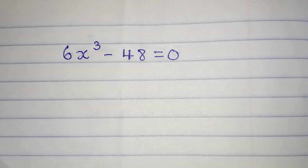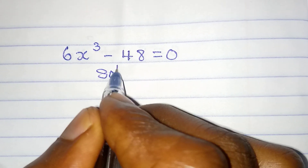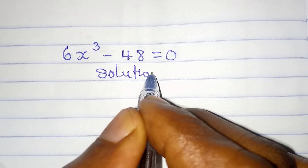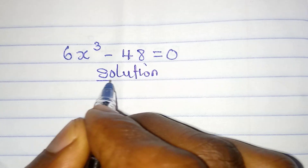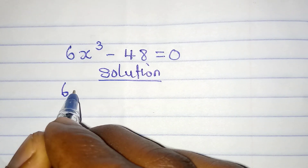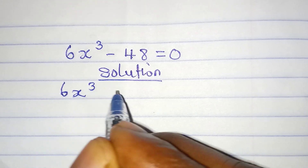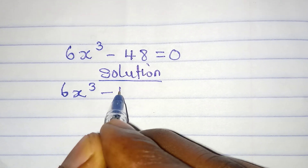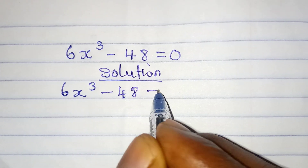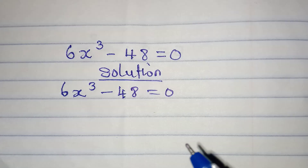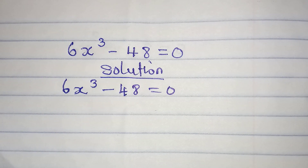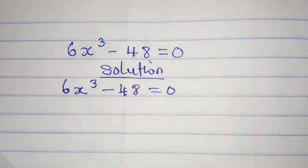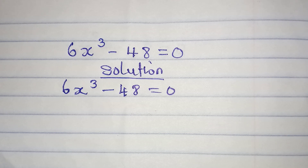Hello everyone, let's solve this problem very quickly. We have 6x to the power of 3 minus 48 equals 0, and we are going to solve this problem completely.